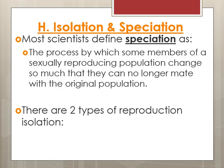Most scientists define speciation as the process by which some members of a sexually reproducing population change so much that they can no longer mate with the original population. The key for species is that they have to be in a reproductive community, but there are two types of reproductive isolation.